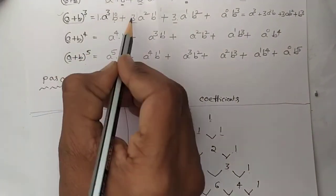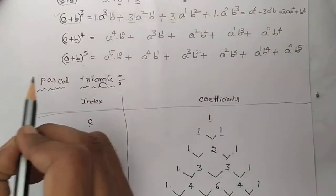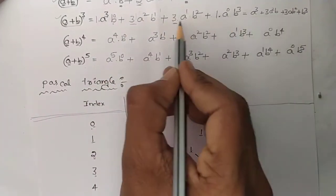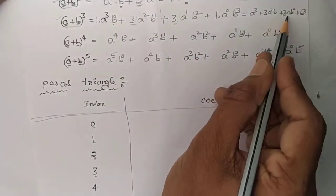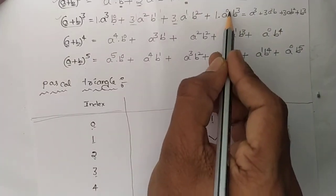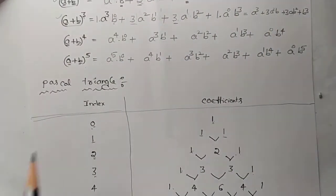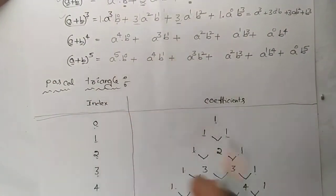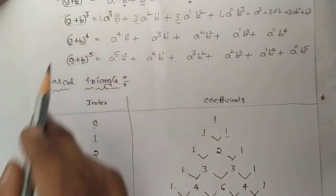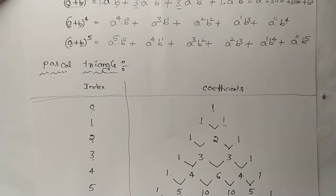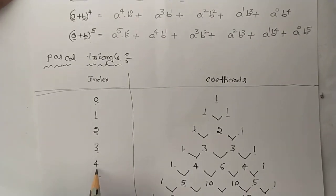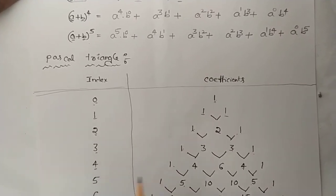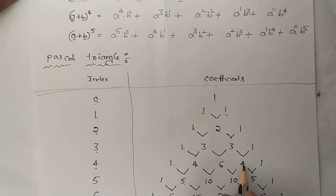So for (a + b)³: 1·a³·b⁰ + 3·a²·b¹ + 3·a¹·b² + 1·a⁰·b³ = a³ + 3a²b + 3ab² + b³. Now for (a + b)⁴, if the index is 4, Pascal's triangle gives coefficients 1, 4, 6, 4, 1.